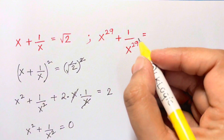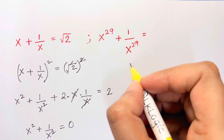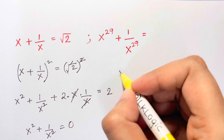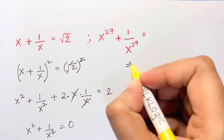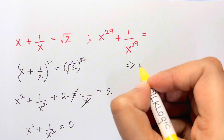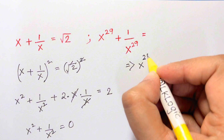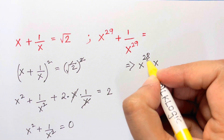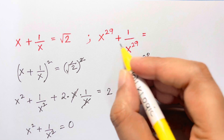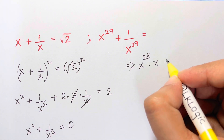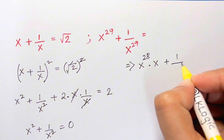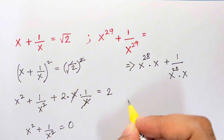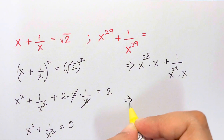Now let's solve for x²⁹ + 1/x²⁹. We can write x²⁹ as x²⁸ · x, since 28 + 1 = 29. Similarly, 1/x²⁹ becomes 1/(x²⁸ · x).